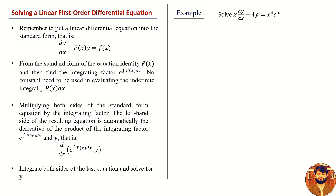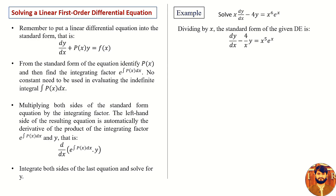Example: Solve x dy over dx minus 4y equals to x to the power 6 e raised to the power x. This is our first order linear differential equation. It is not in standard form because the first term is not dy over dx alone. So, dividing both sides by x, the standard form of the given differential equation is: dy over dx minus 4 upon x times y equals to x to the power 5 e raised to the power x. This is equation number 1.